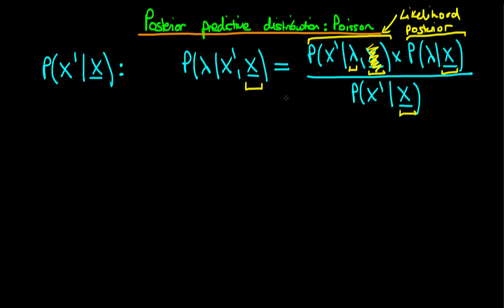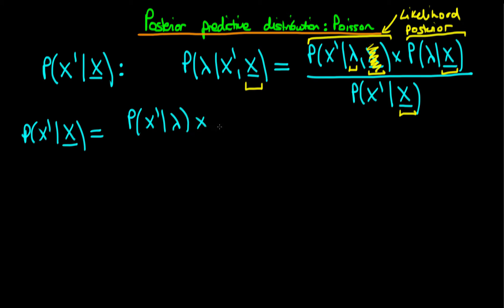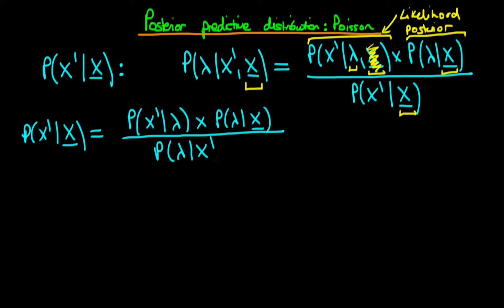What we can do is rearrange this. The probability of x primed given x — the thing we're trying to get hold of — is actually equal to the probability of x primed given lambda (just the likelihood), times the probability of lambda given x, all divided through by the probability of lambda given x primed and x. We know everything in the numerator, but what about the denominator?